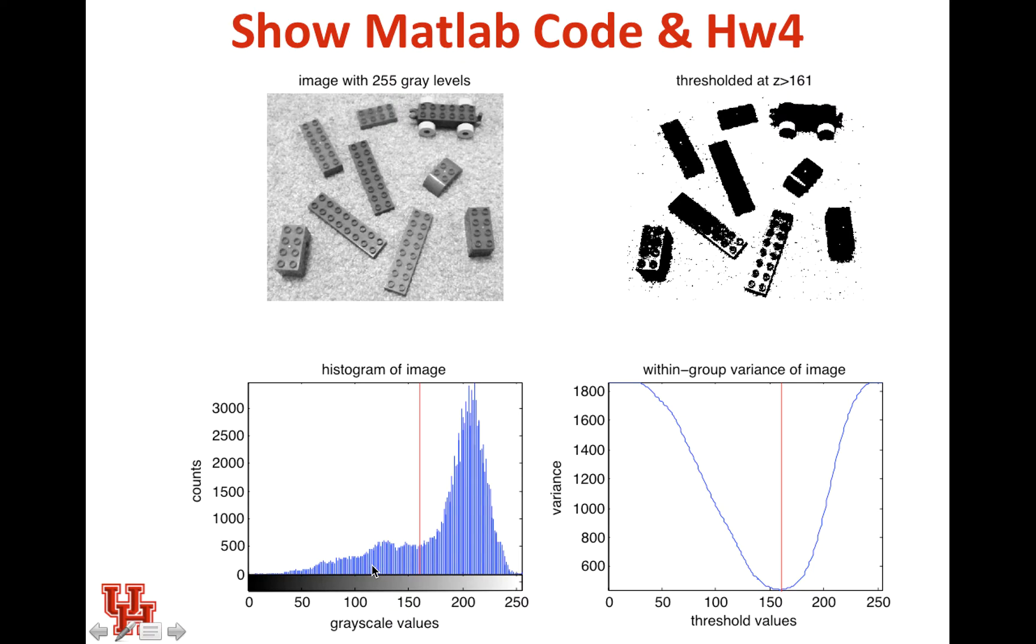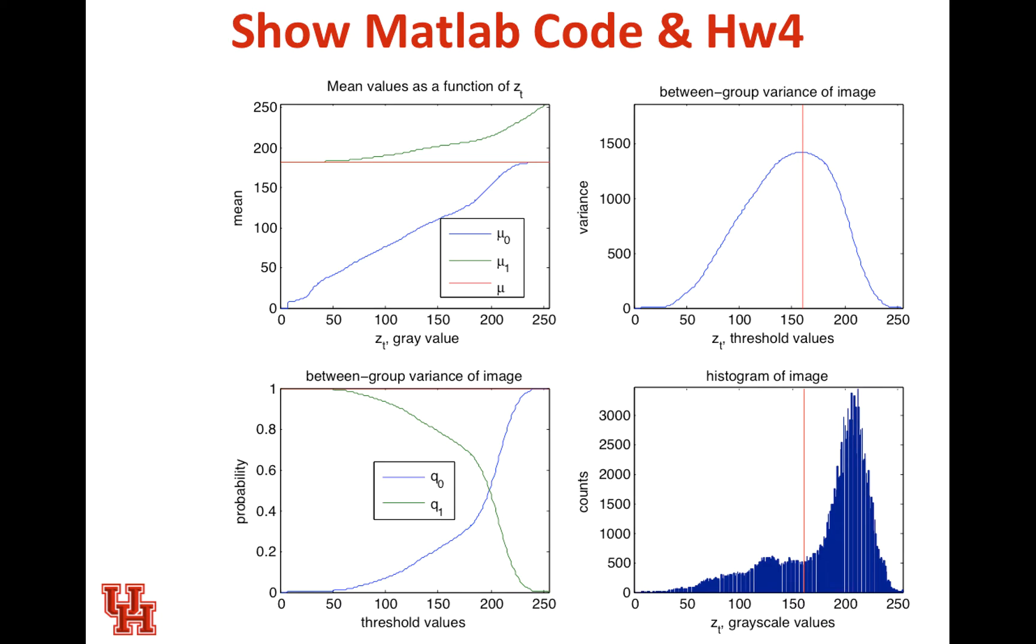For our pixel values that are part of our object, if we calculate their variance between them, you can see that there is this natural trough right in between them. So what we like to do is minimize the within-group variance of the image. The neat thing about this minimizing the within-group is the same thing as maximizing the between-group variance of the image. It turns out that one of those is easier to compute than the other.